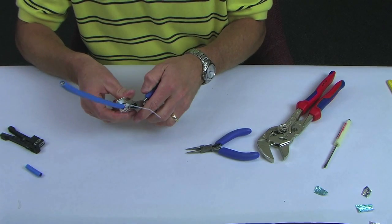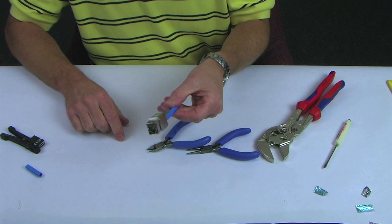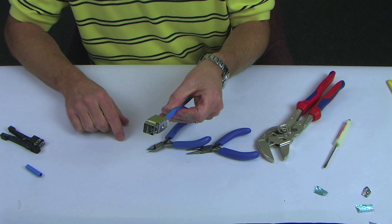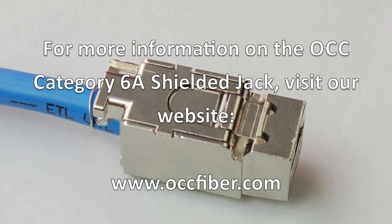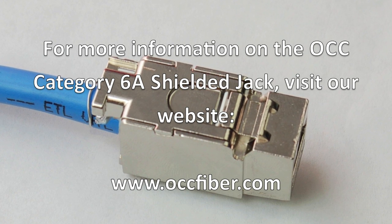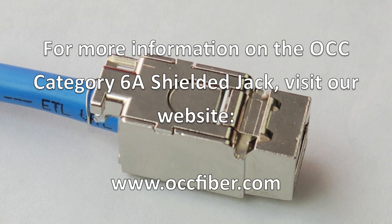Cut the excess cable tie with diagonal cutters. Now you have completed the termination for the OCC Category 6A shielded jack and it is ready for insertion into any OCC KMJ faceplate or OCC Category 6A patch panel.